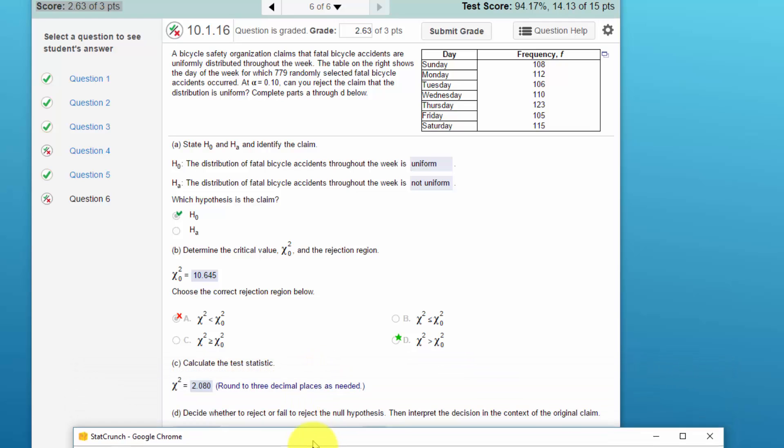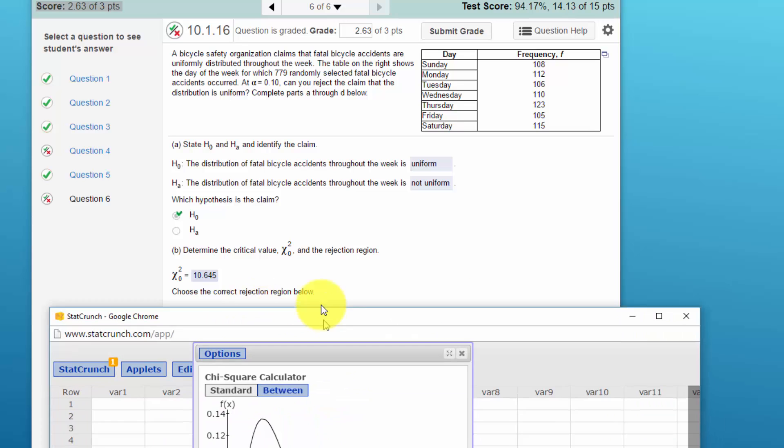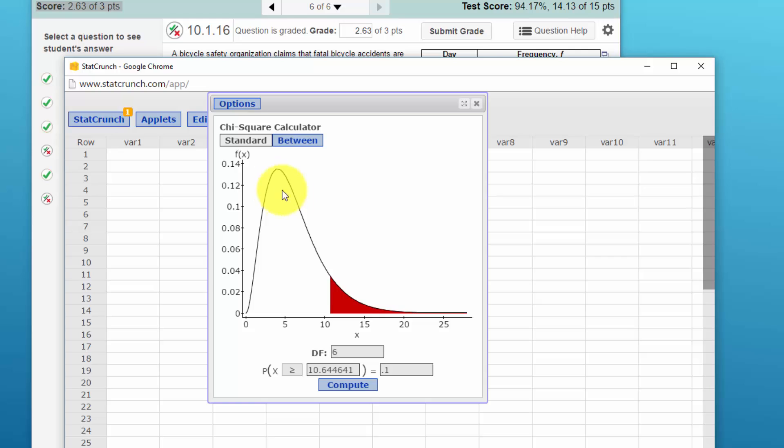So the next thing we need to do is to select the correct rejection region. And remember that when we're doing a Chi-Square, either test for independence or for goodness of fit, it's always a right tail test. And even though in this calculator it shows greater than or equal to, our tests are always significant if the standardized test statistic is greater than the critical value, this case of ten point six four five.